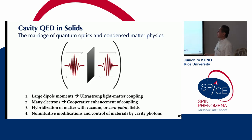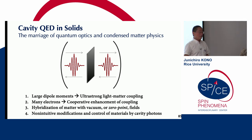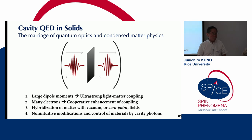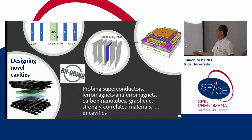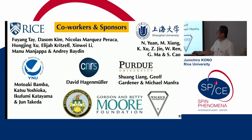In summary, cavity QED in solids can be very different from cavity QED of atomic and molecular systems, because of the existence of many interacting electrons and the cooperative light-matter interaction. We can expect hybridization of matter and photons to produce new phenomena and new phases. We are working on many different interesting material systems, including superconductors, ferromagnets, antiferromagnets, carbon nanotubes, graphene, and strongly correlated materials like Mott insulators and Kondo insulators. Thank you very much.